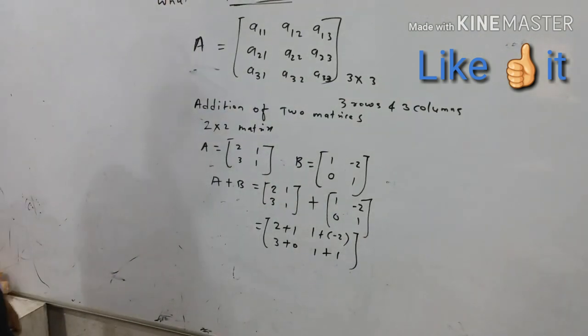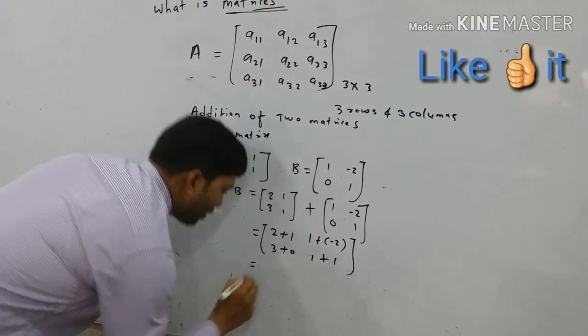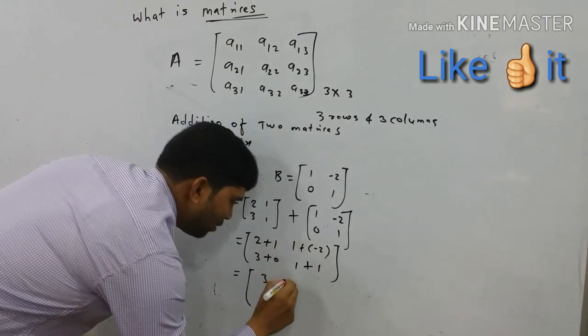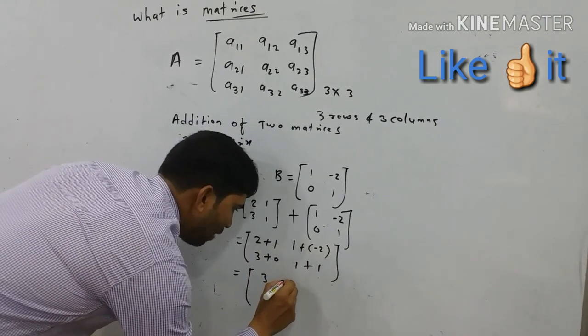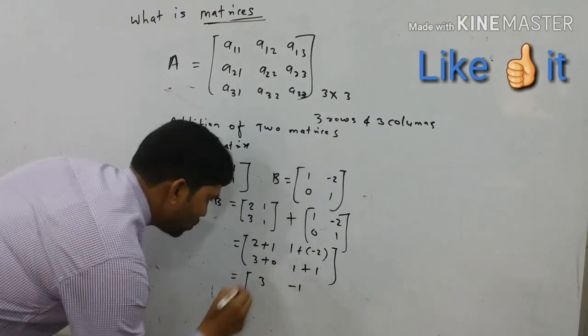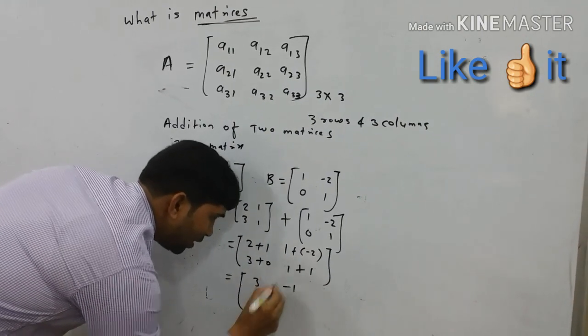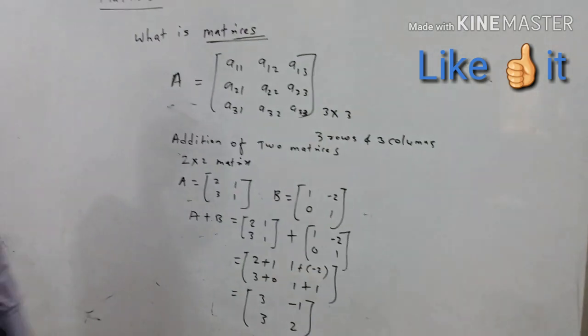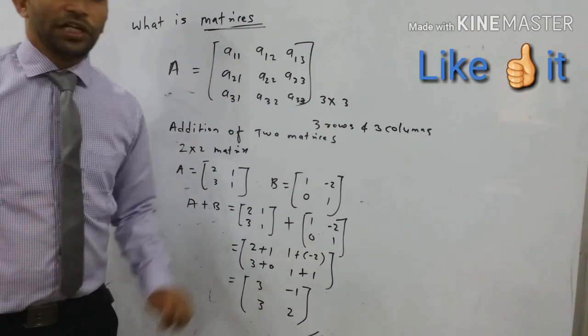So we get matrix here. 2 plus 1, we get 3. 1 plus minus 2, we get minus 1, 3 plus 0, 3 and 1 plus 1, 2. So we get final answer 3 minus 1, 3, 2.